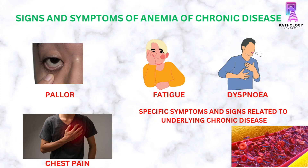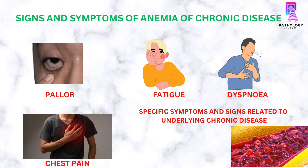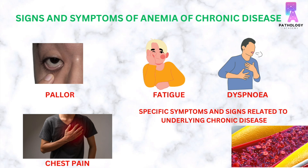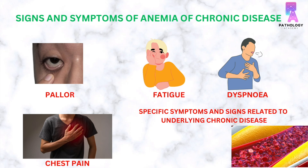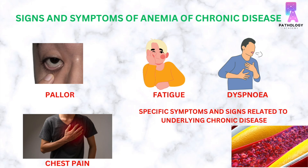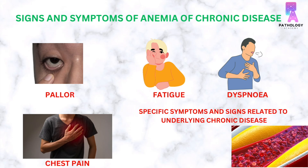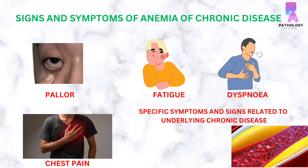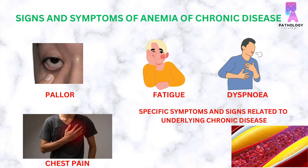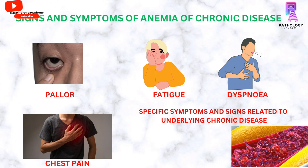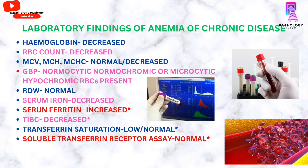The signs and symptoms of anemia of chronic disease depend on the underlying condition. The generalized signs and symptoms of anemia are also present, like pallor, dyspnea, fatigue, and chest pain.